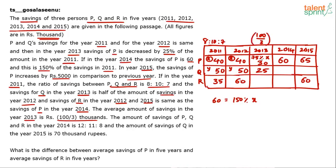In 2014, the ratio of savings of P:Q:R is 12:11:8. P's 2014 savings = 60, which is 12 parts, so each part = 5000. Q's 2014 savings = 11 parts = 55, and R's 2014 savings = 8 parts = 40. The table is now complete.